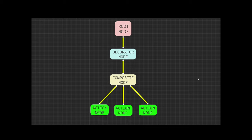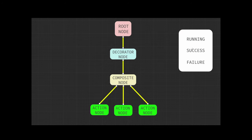Each of these nodes can return one of three states: either running, success, or failure. Running just means execute me again on the next frame. Success means I'm done, do something else. And failure means I'm also done, but something went wrong. The decorator node and the composite node primarily use these states to decide what to do next in the tree.